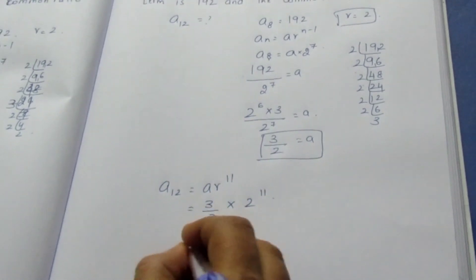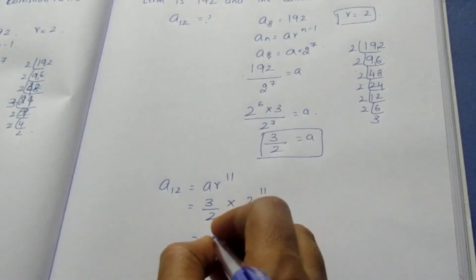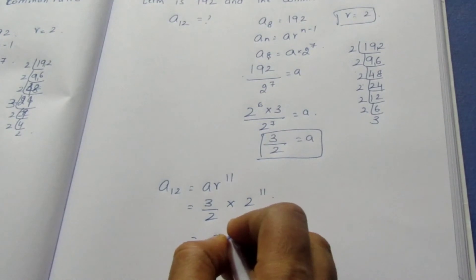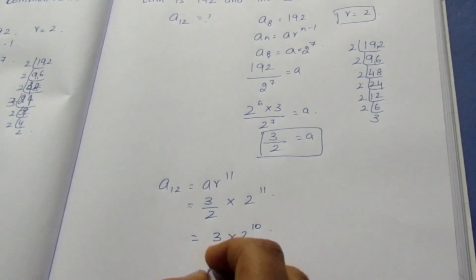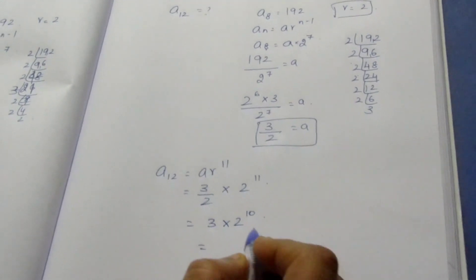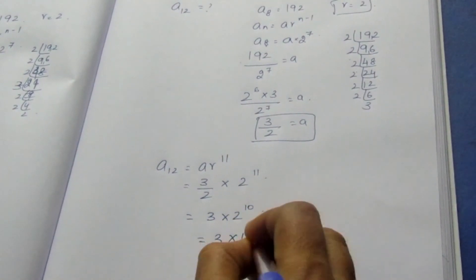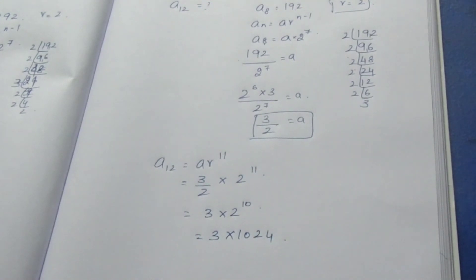We can subtract this because again it is in division. So 3 × 2^10. Remember the value of 2^10 is 1024. Always remember, for 2^10 the value is 1024.